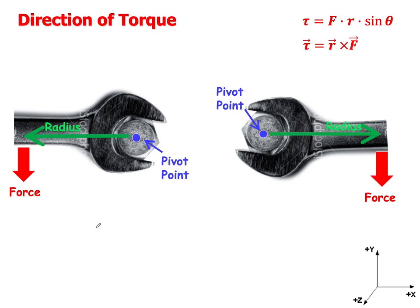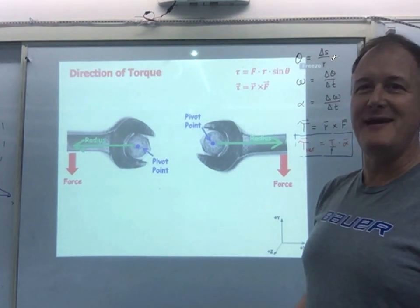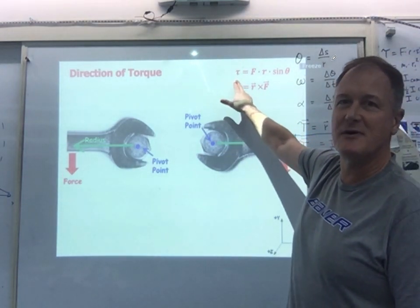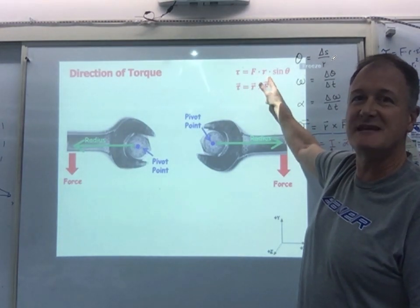The direction of torque is the other part. You know how to calculate the magnitude — that's just force times R times the sine of theta. But torque is also a vector quantity, which means it has both magnitude and direction. It involves something called a cross product. So up here you see the equation for torque we've been using: torque equals force times the radius times the sine of the angle.